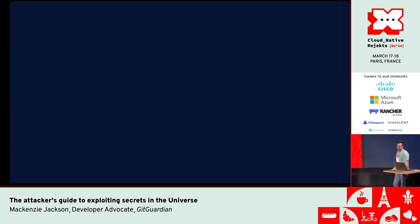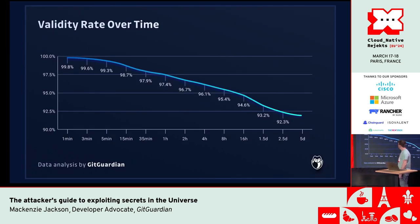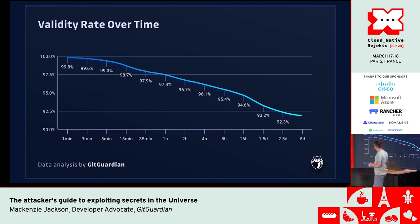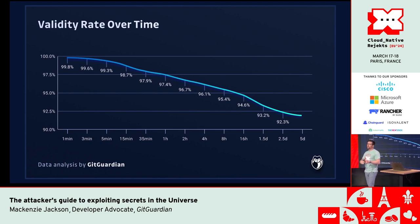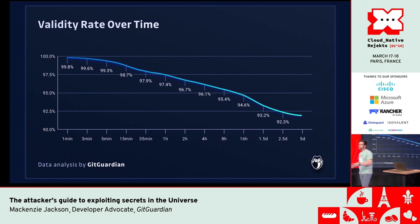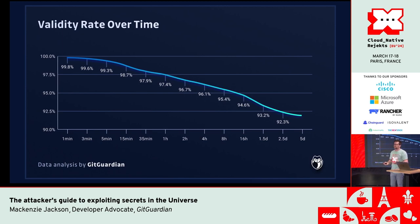We alert people when they leak a key and monitor if that key gets revoked. After five days of checking, 92% of the keys are not revoked. Often people will delete the repository, delete the commit, or rewrite history to get rid of it — but the key is still active and still being leaked. There are so many different services that check for this that the key is absolutely still out there in someone's data.